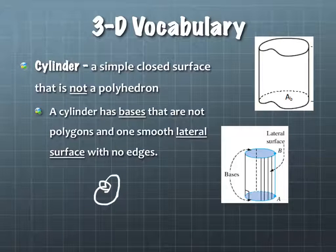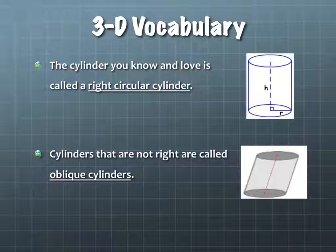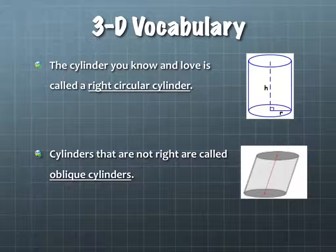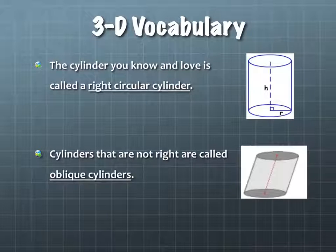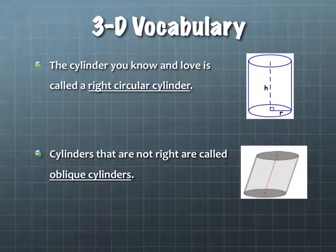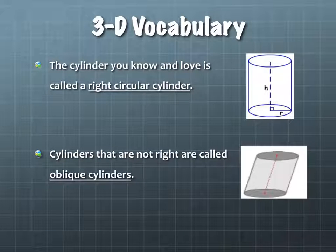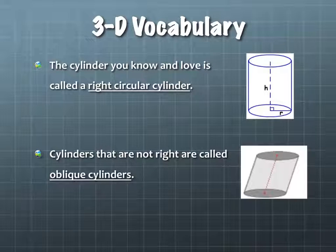The cylinder you know and love is called a right circular cylinder. It's 'right' because it's straight up and down — if it's leaning, that's not right. It's 'circular' because the base is a circle. If the base is not a circle, it's non-circular. If it's not straight up and down and it's tilted, we call that oblique. We've seen oblique before — oblique means slanted, like an oblique asymptote in Algebra 2.